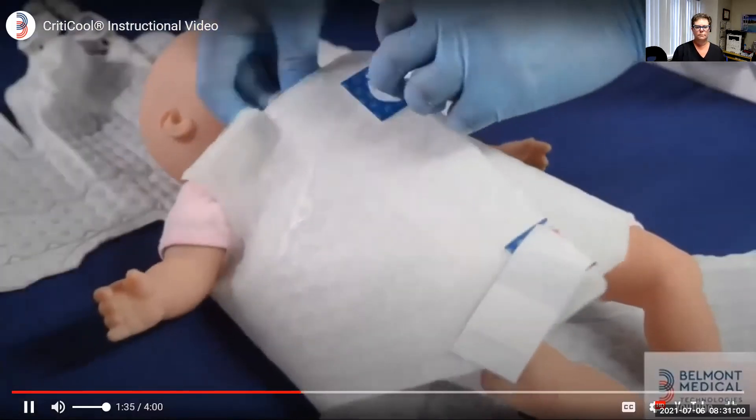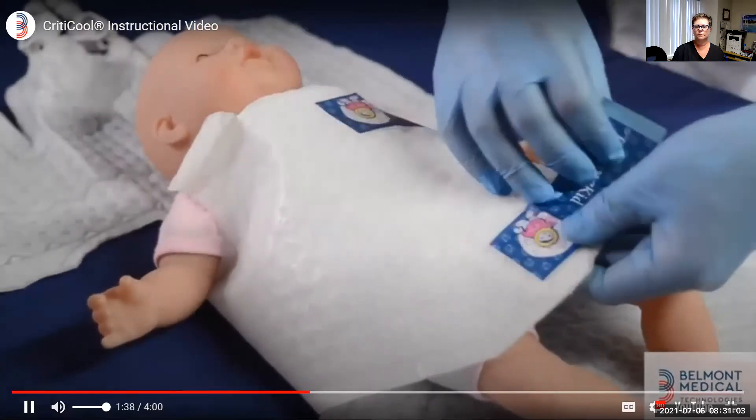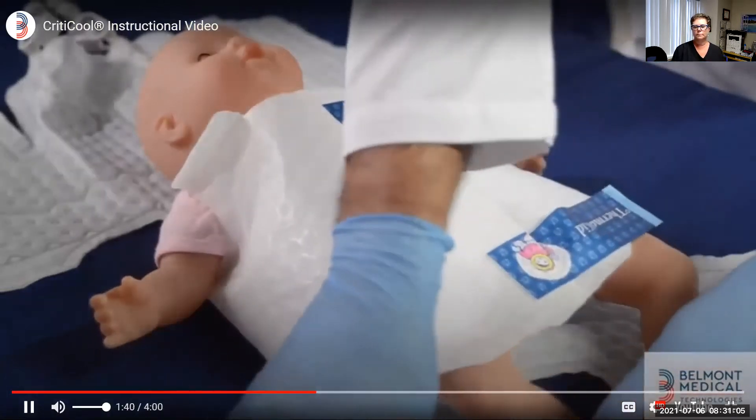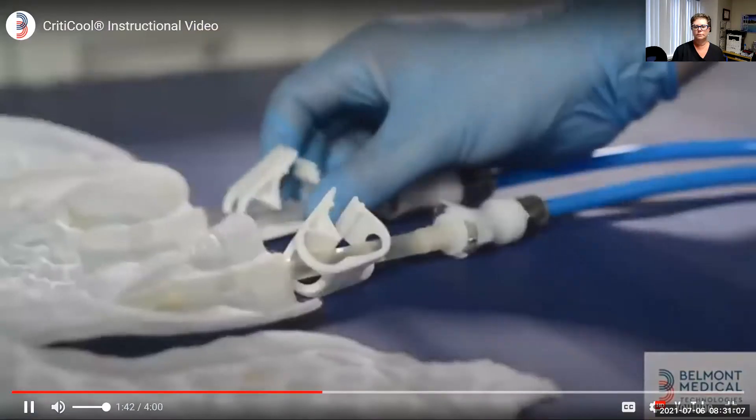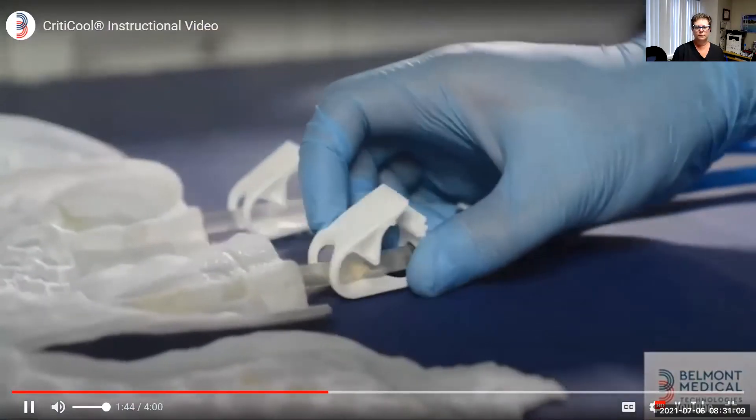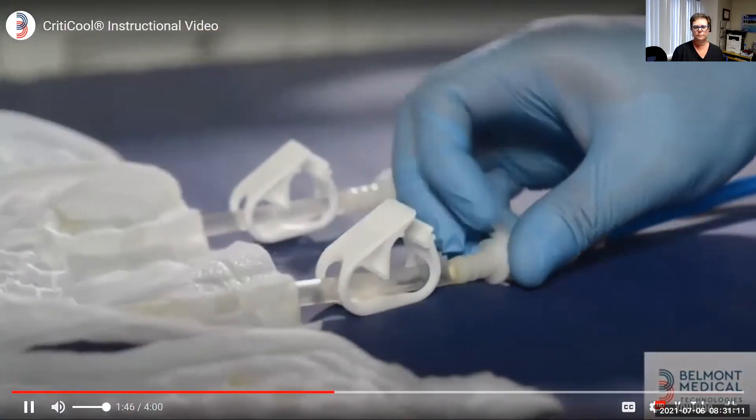Once the wrap is filled with water, secure wrap on the patient. Make sure to leave one finger breadth between the wrap and the patient. Make sure the clamps are open so that water will circulate through the wrap throughout the treatment.